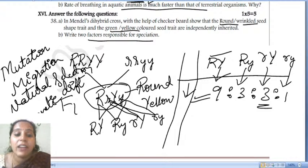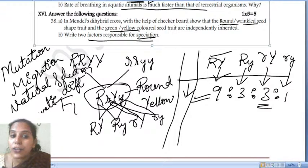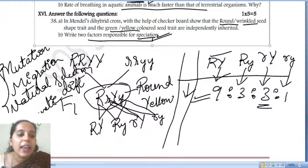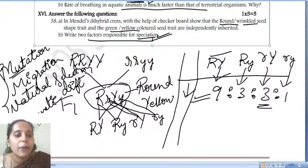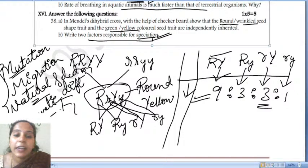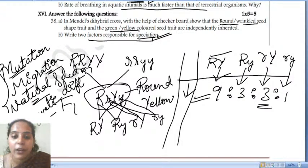These mechanisms of evolution lead to speciation — the origin of new species from existing species. Mutation causes change in DNA sequence; natural selection causes change in frequency of genes giving survival advantage; genetic drift also contributes to survival advantage; migration involves the movement of organisms to new areas.